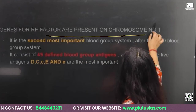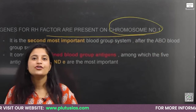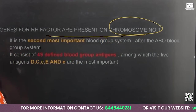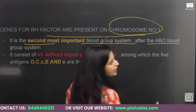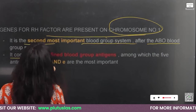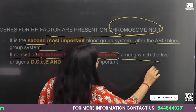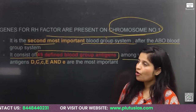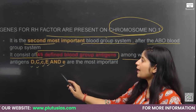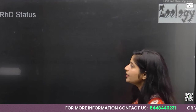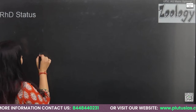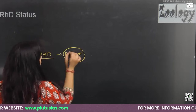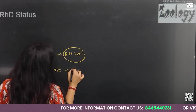Genes for the RH factor are present on chromosome number 1, while genes for the ABO blood group system are present on chromosome number 9. The RH system is the second most important blood group system after ABO. It consists of 49 defined blood group antigens, among which 5 are major: D, C, c, E, and e. The most important is the RH D antigen. If somebody has the RH D antigen on the surface of RBC, they are RH positive. If the RH D antigen is absent, they are RH negative.